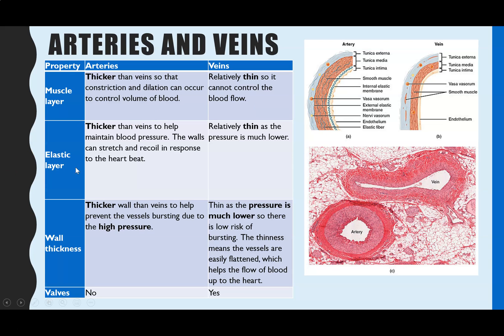Both vessel types are elastic, but arteries have a much much thicker elastic layer. This helps maintain blood pressure and allows arteries to stretch and then recoil back to their original shape in response to the heartbeat — so instead of tearing under high pressure, the vessel stretches instead. Because veins carry blood at much lower pressure, they only need a relatively thin elastic layer, which is the white part visible in the micrograph.